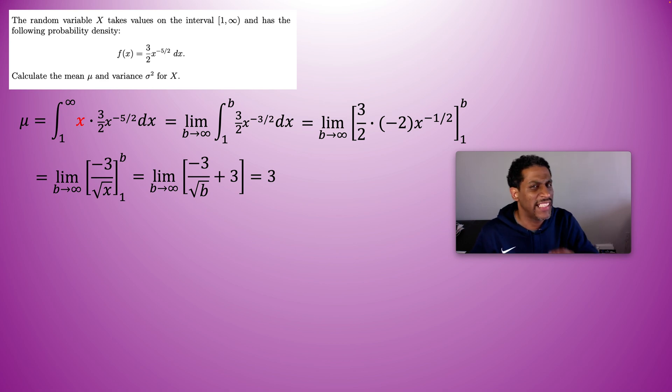Now we're asked for the variance. There's two formulas that you can use for the variance. The standard formula is taking x, subtracting the mean, squaring that, and then multiplying that by the probability density function. I prefer the other formula where you take x squared times the probability density function, integrate that, and then afterwards subtract the mean squared. That works out best. Because you just did integration of x times f of x, now you're integrating x squared times f of x.